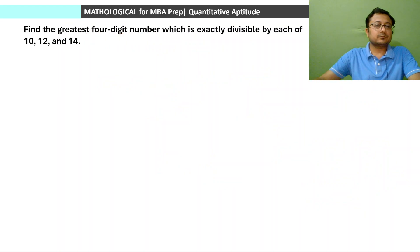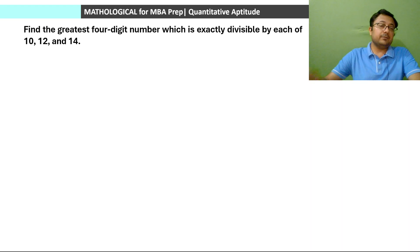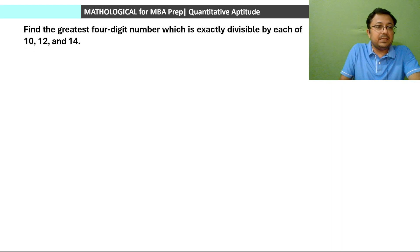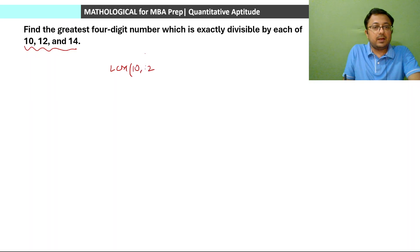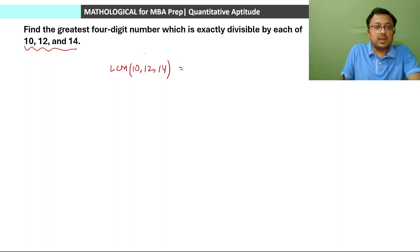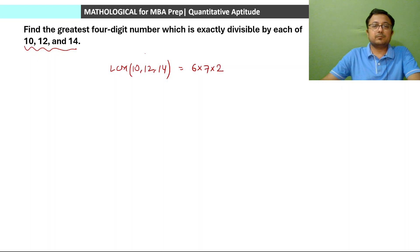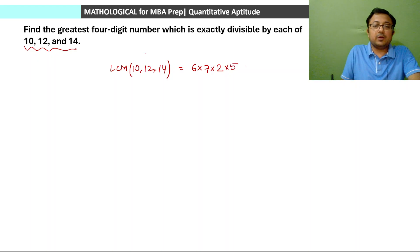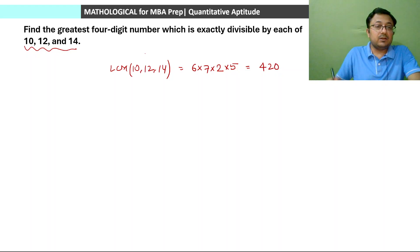Next question: find the greatest 4-digit number which is exactly divisible by each of 10, 12 and 14. Again, we take the LCM of these three numbers. LCM of 12 and 14 is 6 × 7 × 2 = 84. Since 10 = 2 × 5, we multiply by 5 as well, giving LCM = 84 × 5 = 420.